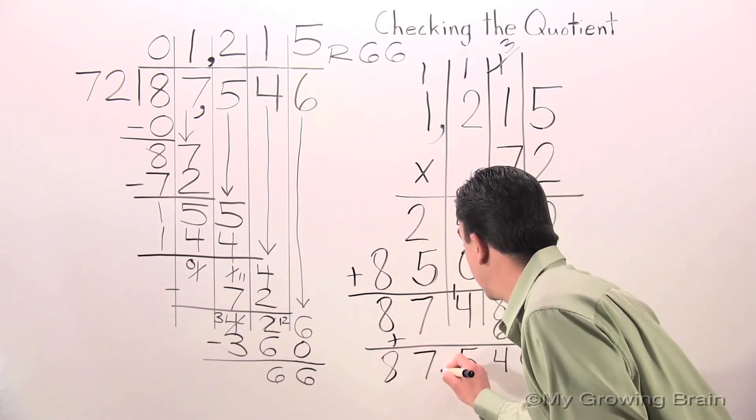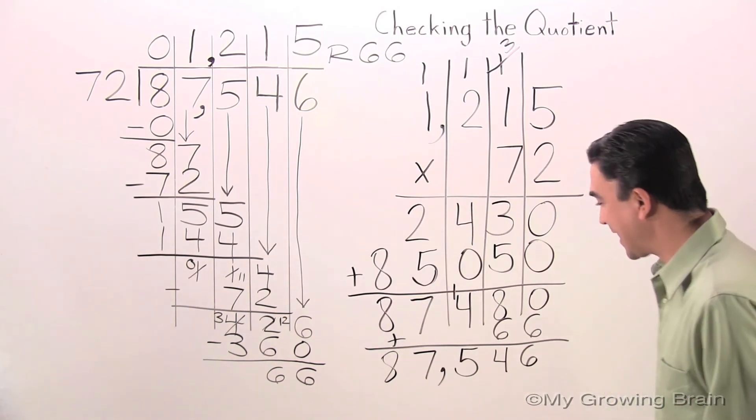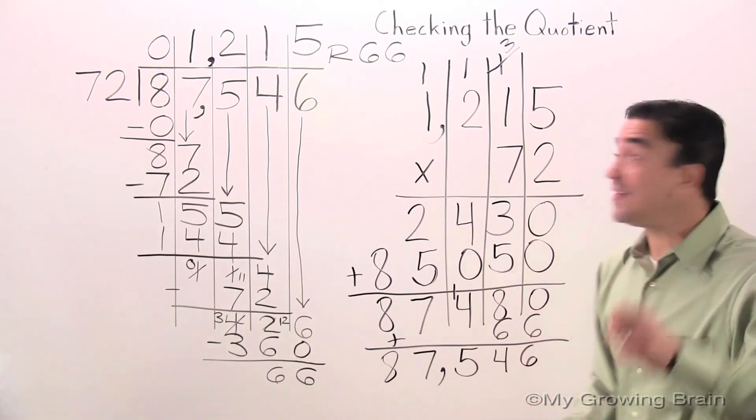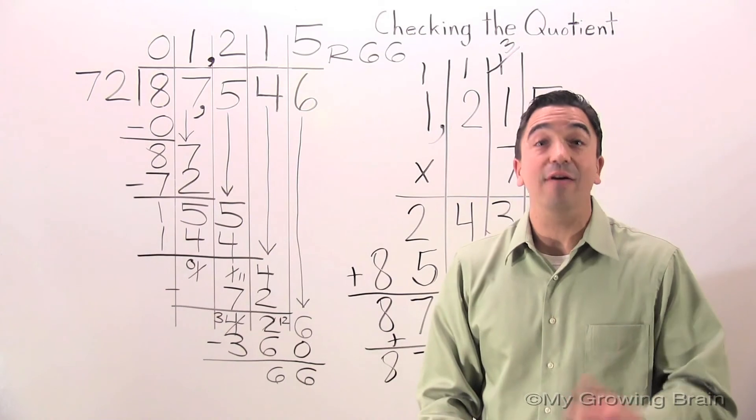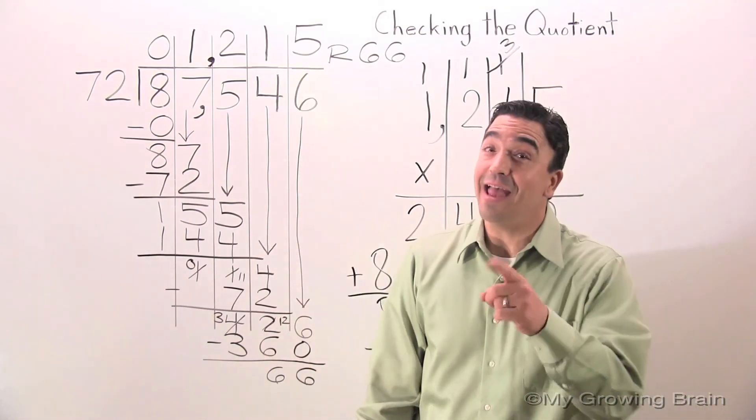Don't forget your comma. 87,546 is equal to 87,546. Therefore, our quotient is correct.